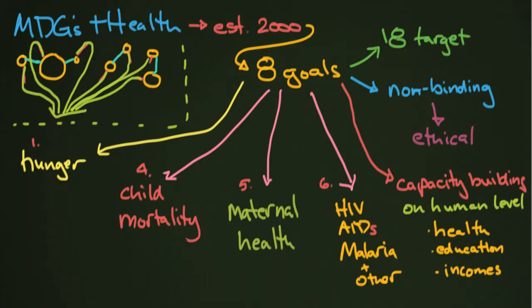So these eight goals, between one and four, there was also universal education and gender equality. Between six and seven, there was sustainable environment, which obviously relates back to health. And then global partnerships, which also relate back to health because a lot of the global partnerships that have arisen since then have been around health care.